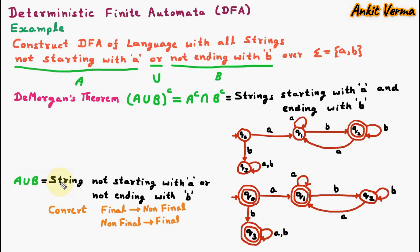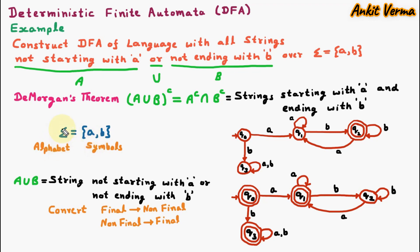We want A union B, which is strings not starting with A or not ending with B. So for A union B complement we do the complement again: converting final states to non-final and non-final states to final states, and our DFA is ready. We also need to generate the language. Sigma equals the set {A, B}, where A and B are symbols and sigma is the alphabet. From A and B we take strings which do not start with A or do not end with B.